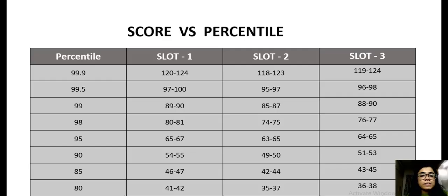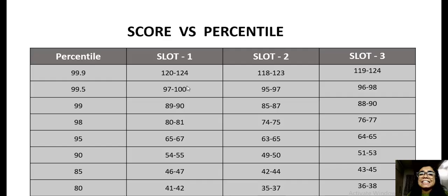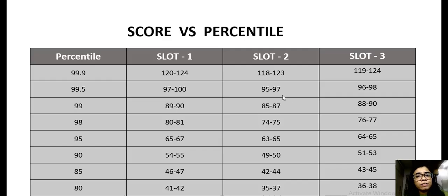Likewise, we have approximated scores for 85, 90, 95, 98, and 99 percentile. If your raw scores are around 89 to 90, that would give you a 99 percentile in slot one. For slot two, 85 to 87, and for slot three, 88 to 94 would correspond to 99 percentile.